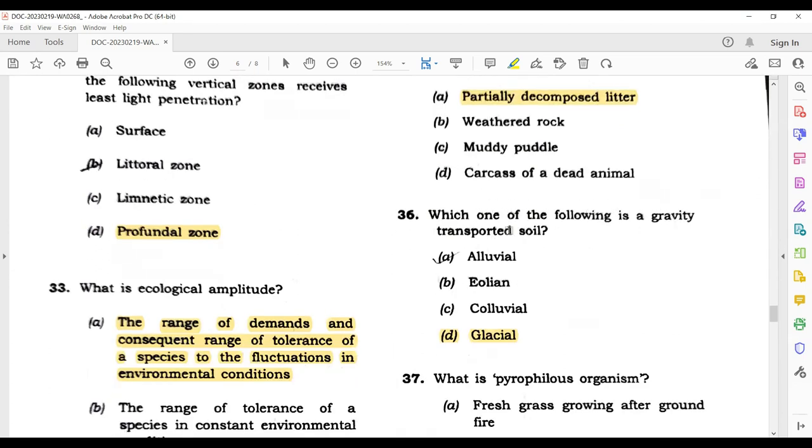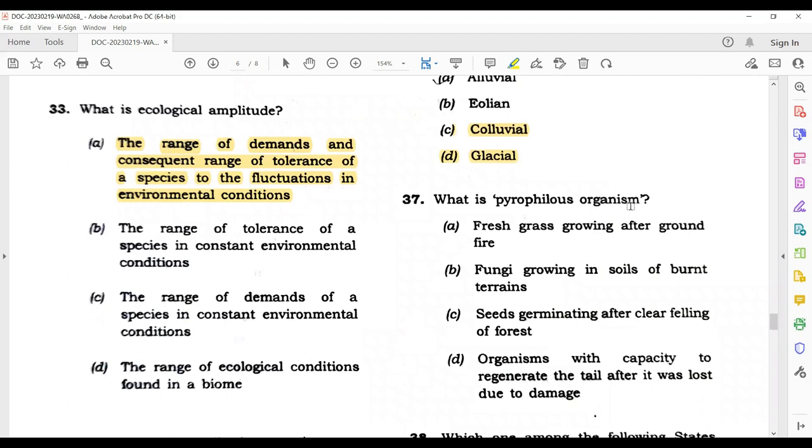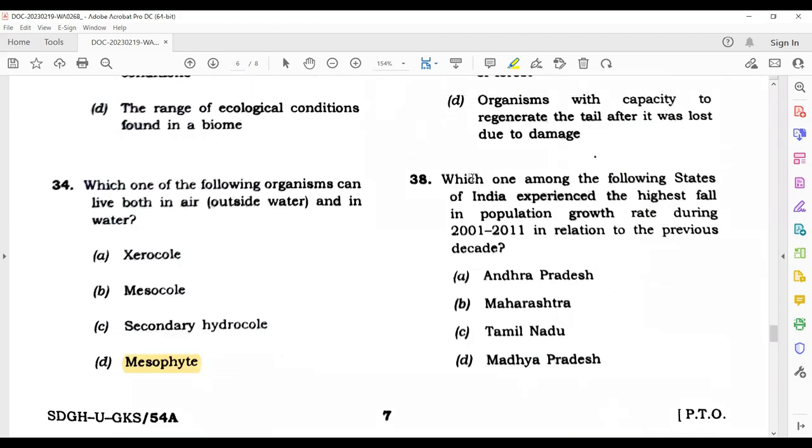What is duff? It is partially decomposed litter. Which one of the following is a gravity transported soil? Its answer is colluvial. What is a pyrophilous organism? Basically pyrophilous refers to fungi growing in soils or burnt areas. Which one among the following states of India experienced the highest fall in population growth rate during 2001-2011 in relation to the previous decade? The correct answer here is Andhra Pradesh.